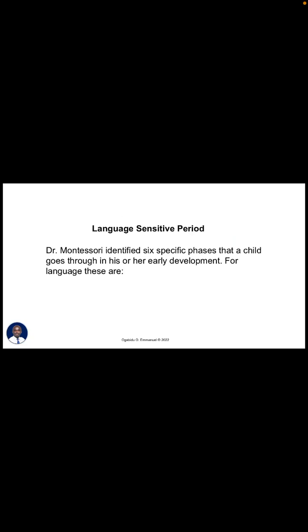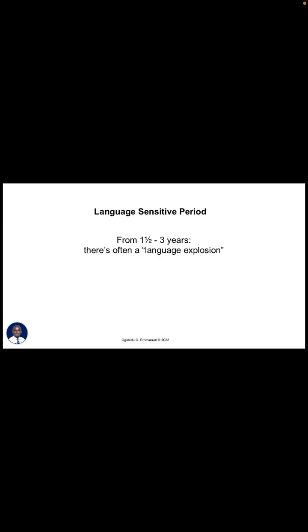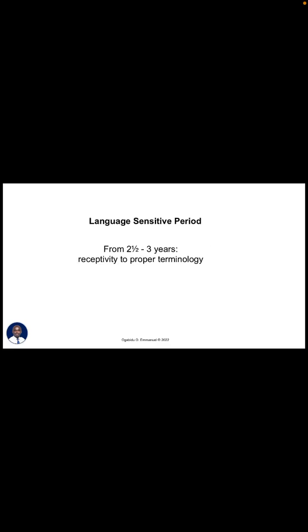There are six specific phases a child goes through in early language development. From birth to six years children are sensitive to vocal sounds. From one and a half to three years there is often a language explosion — this is when children begin to talk. From two and a half to three years, children are open to receiving the proper names of things. Be careful to tell the child the proper names — if the child says 'tata,' you reinforce 'water.' It is very important to reinforce accurate names of things in the environment.